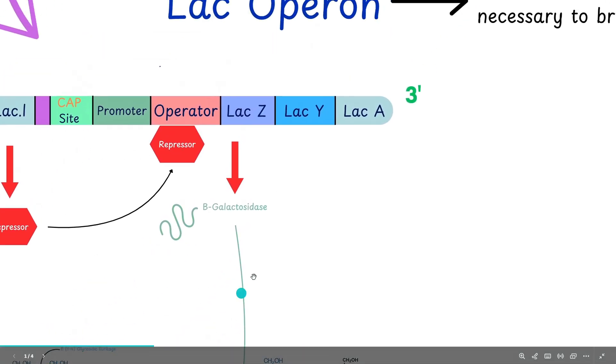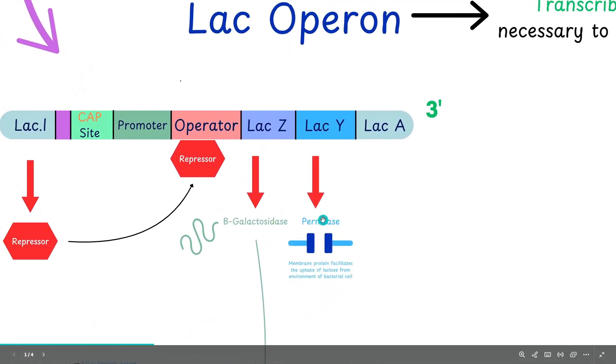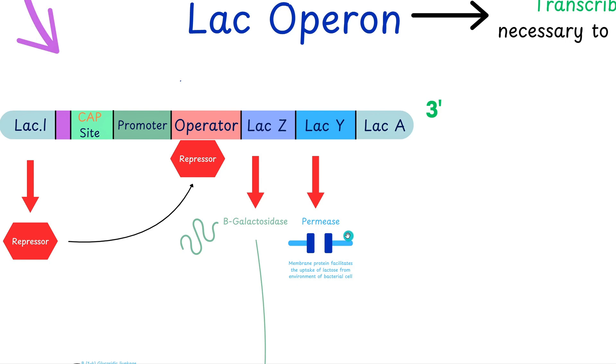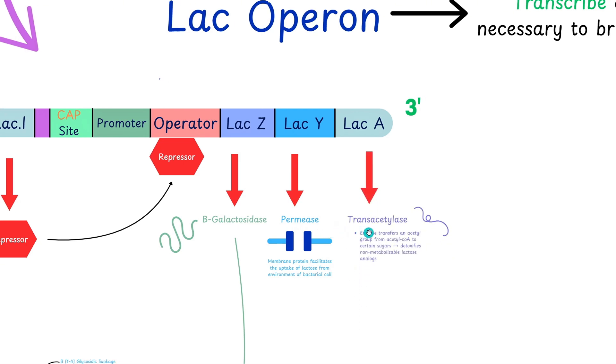Lac Y, going up here, codes for permease, a membrane protein that facilitates lactose uptake from the environment into the bacterial cell. Lac A codes for transacetylase, which transfers an acetyl group from acetyl-CoA to specific sugars, detoxifying non-lactose or non-metabolizable lactose analogues.